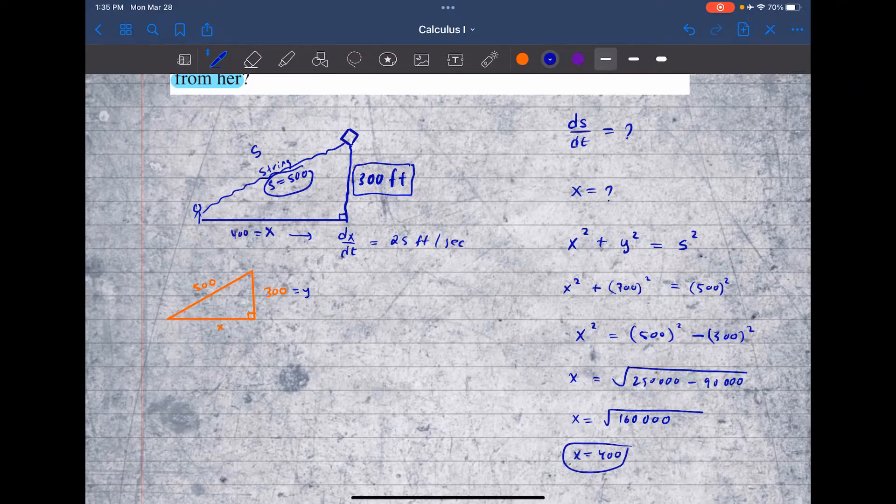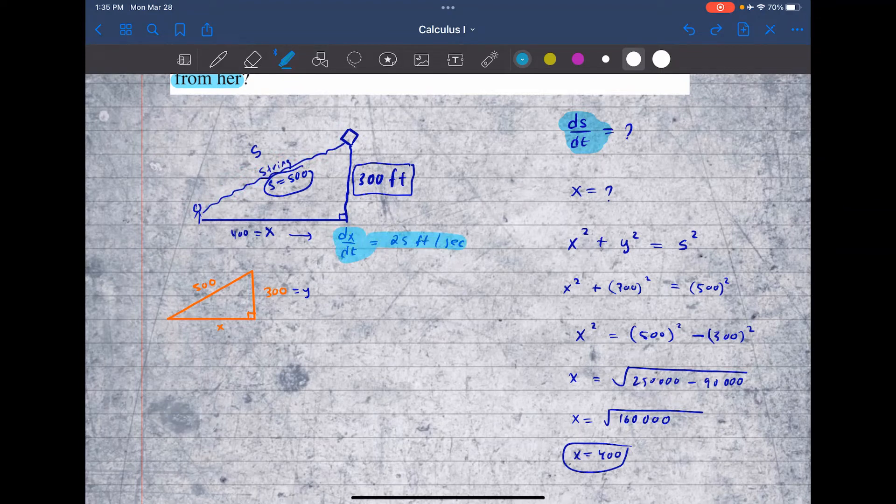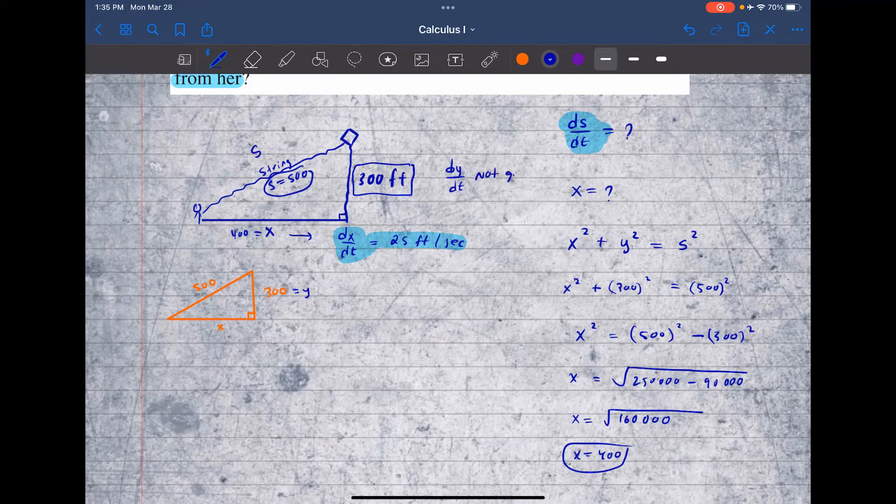Well, now we can go back. So we're given these particular information, we're looking for ds/dt. That's this distance right here, the rate of this, how that's changing. And we're given dx/dt. We're not given dy/dt. So dy/dt, this is not given.